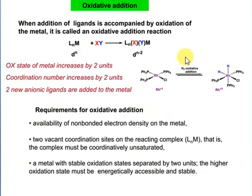For oxidative addition to occur, there are three conditions that must be fulfilled. The first is availability of non-bonded electron density on the metal — the metal should be in a very low oxidation state, for example zero or +1, so that electron density is available.